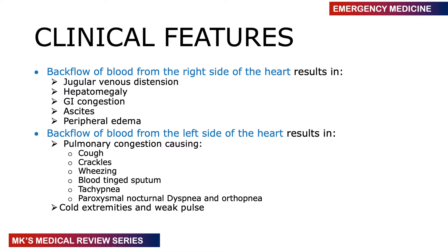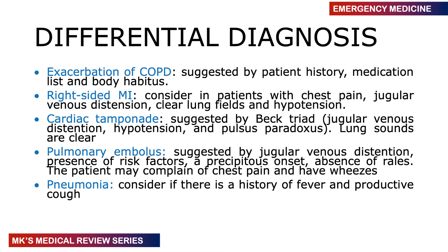Right heart failure manifestations include hepatomegaly, GI congestion, ascites, peripheral edema, or generalized edema known as anasarca. If the problem is with the left side of the heart, which receives blood from the lungs but fails to pump blood to the system, blood backs up into the lungs causing pulmonary congestion. Features include cough, crepitations, wheezing, blood-tinged sputum, tachypnea, paroxysmal nocturnal dyspnea, orthopnea, cold extremities, and a weak pulse. Sometimes all these features occur together, especially in congestive heart failure with an underlying exacerbating factor.